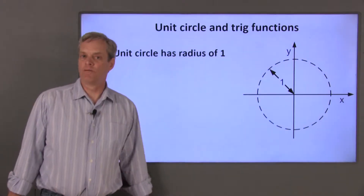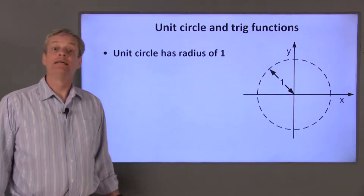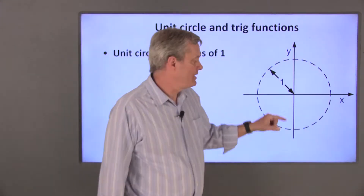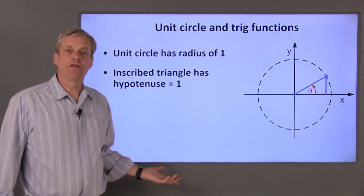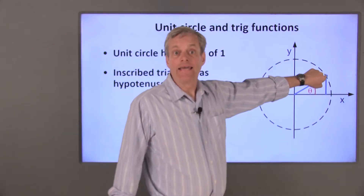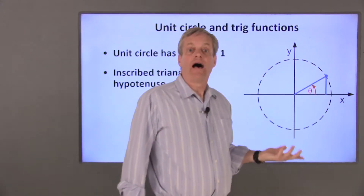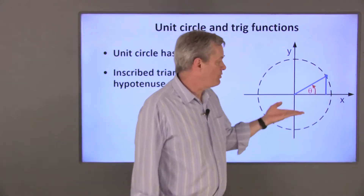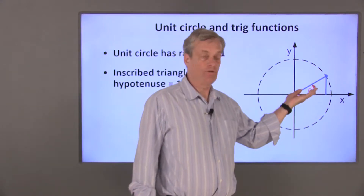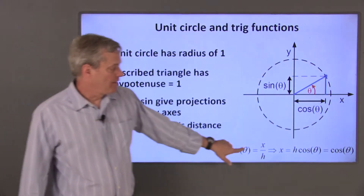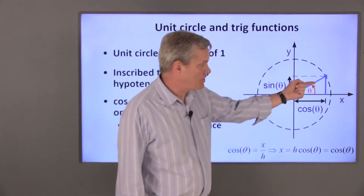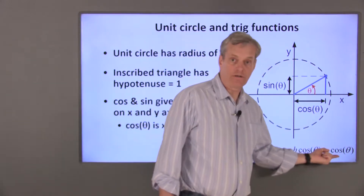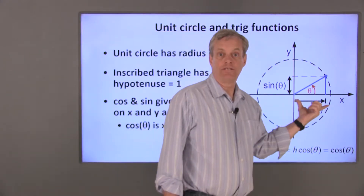Now let's talk about defining trigonometric functions in terms of a point that lies on a unit circle centered at the origin of a rectangular coordinate system. A unit circle has a radius of 1, and its center is at the intersection of the xy axes. If I choose an arbitrary point on this circle, I can define a right triangle based on this point. The hypotenuse of the triangle will be the radius of the circle, so the hypotenuse length is 1. I'll define the angle between the positive x axis and the hypotenuse as theta. The cosine of theta equals x over h, so the x position of this point is h times cosine of theta. Since the hypotenuse is 1 for a point on the unit circle, the x location of this point is just the cosine of theta.